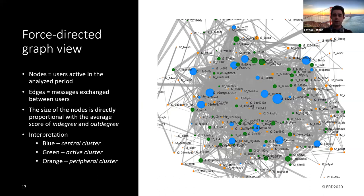Moving on to the visual part, I will briefly present all the views we generated. All views are based on the clustering of users into the three categories: central, active, and peripheral. This first view creates a graph coloring them accordingly. Based on individual cohesion scores, each dot representing a user is bigger or smaller, and the links between users are also bigger or smaller, considering the cohesion score of the messages they exchanged.